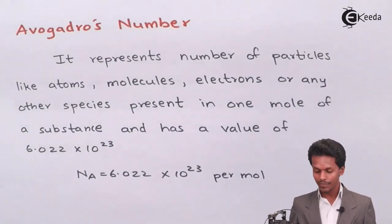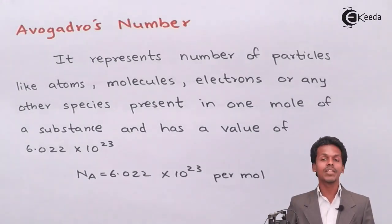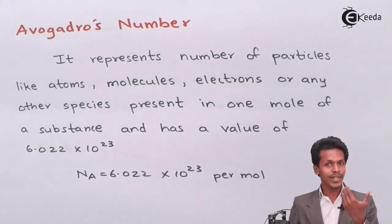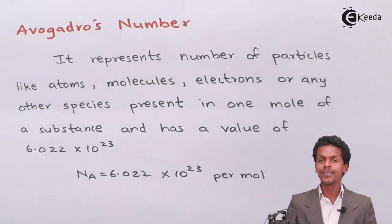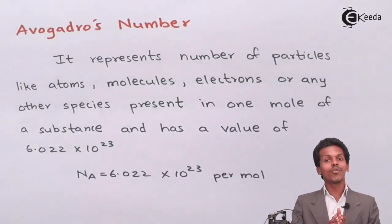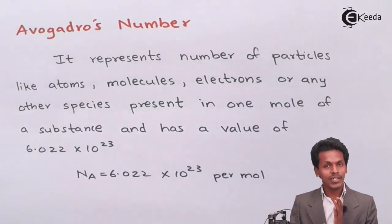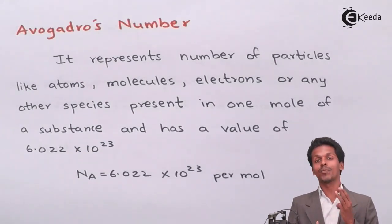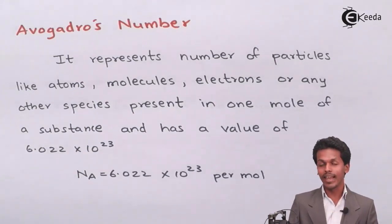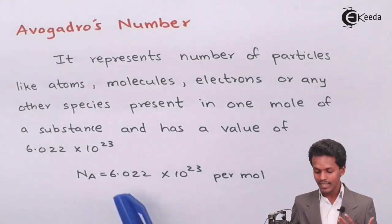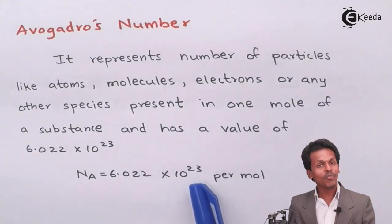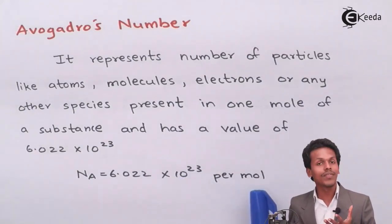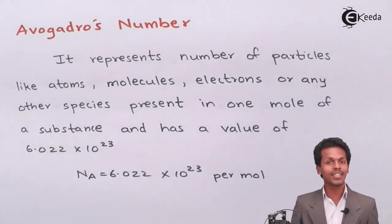Nₐ means Avogadro's number, equal to 6.022 × 10²³. It can apply to a particular electron, a particular molecule, or a particular ion. The unit can be written as the number of particles per mole — and that is Avogadro's number.